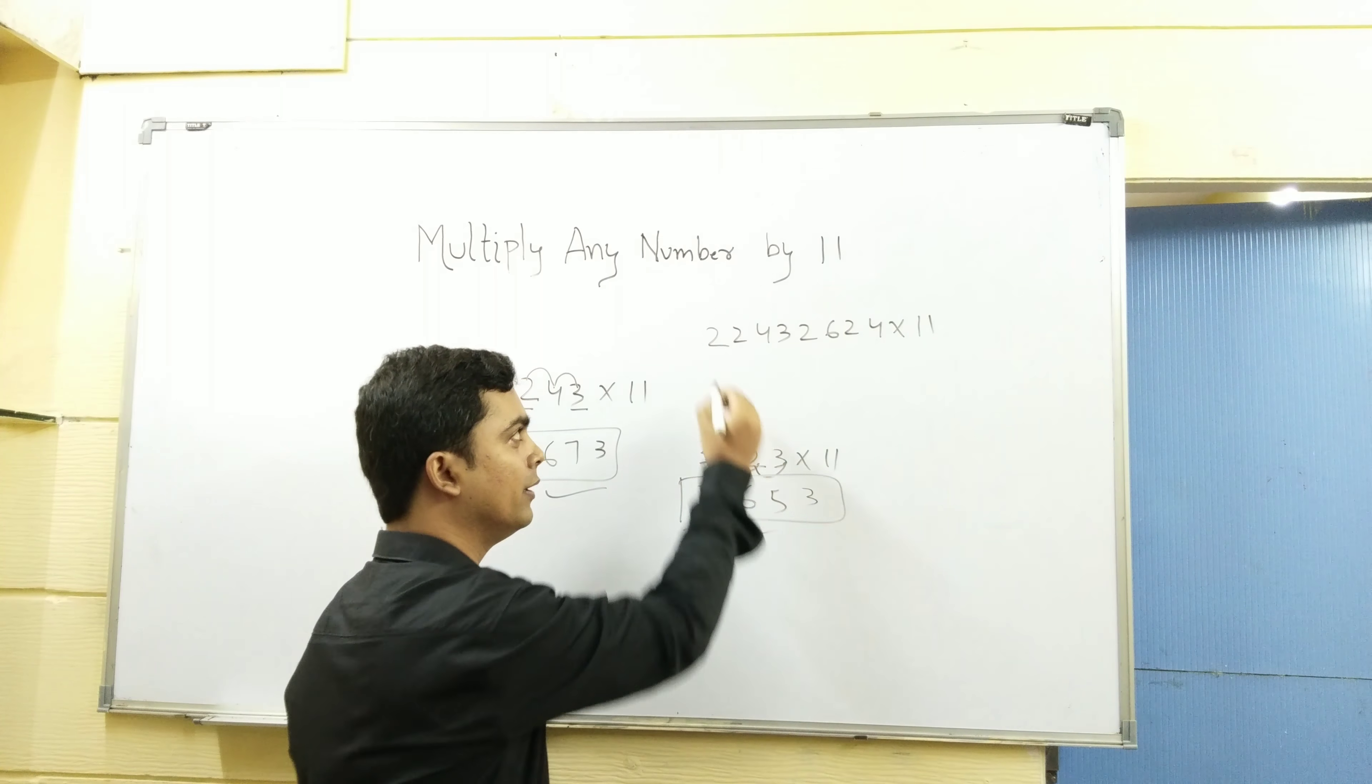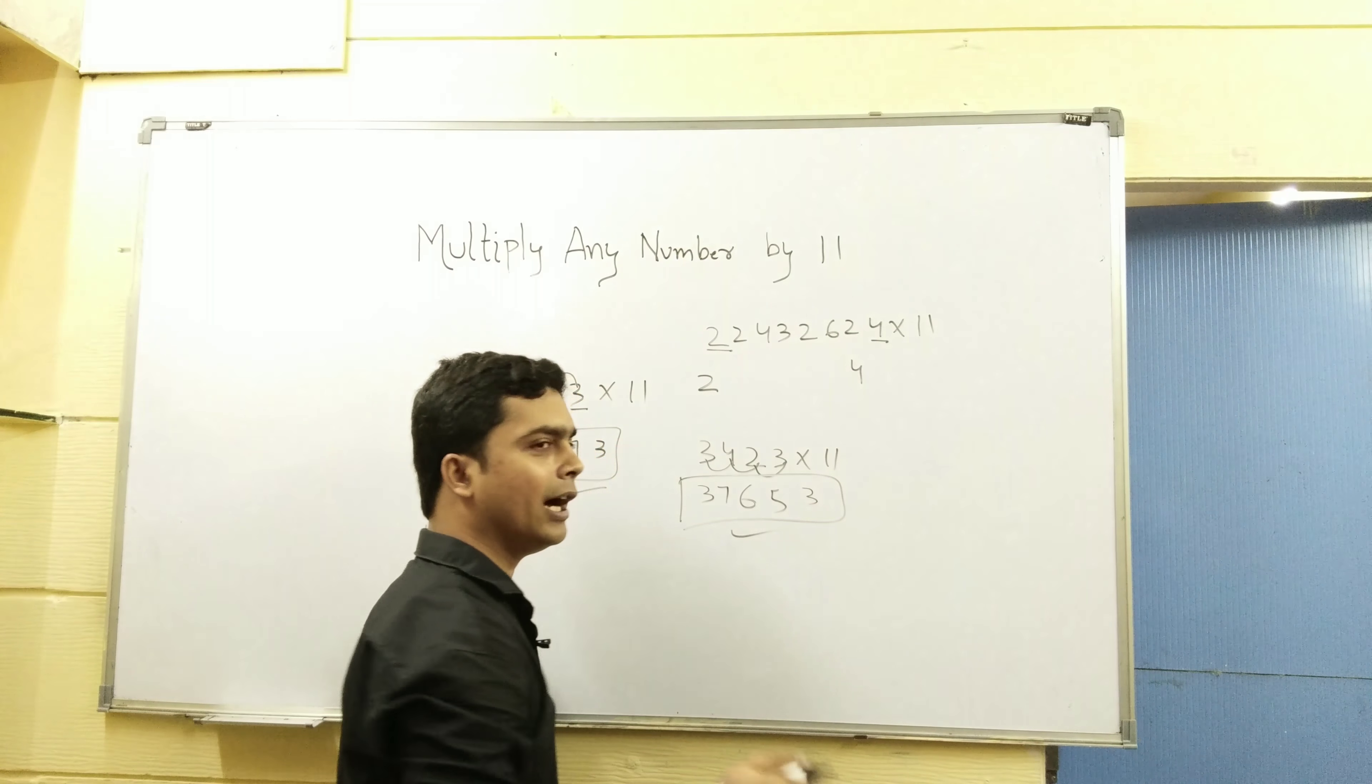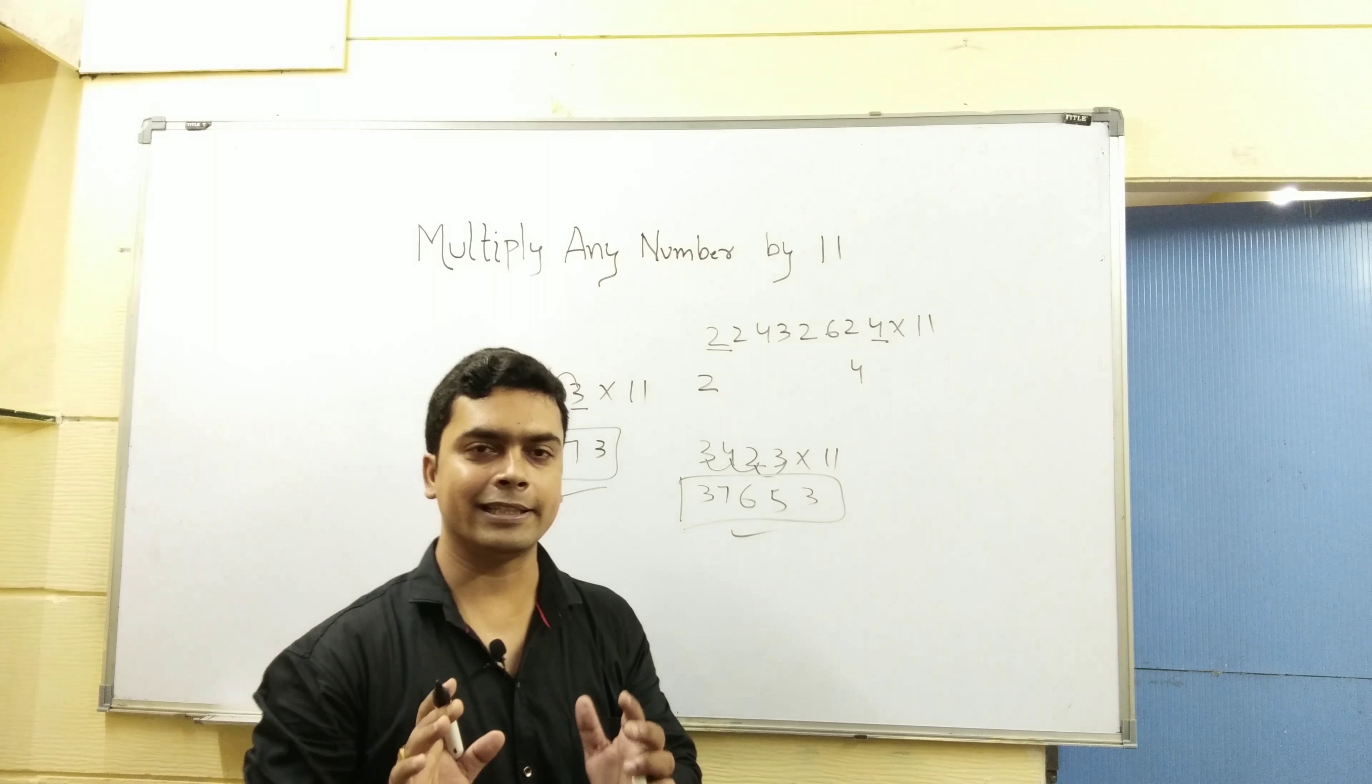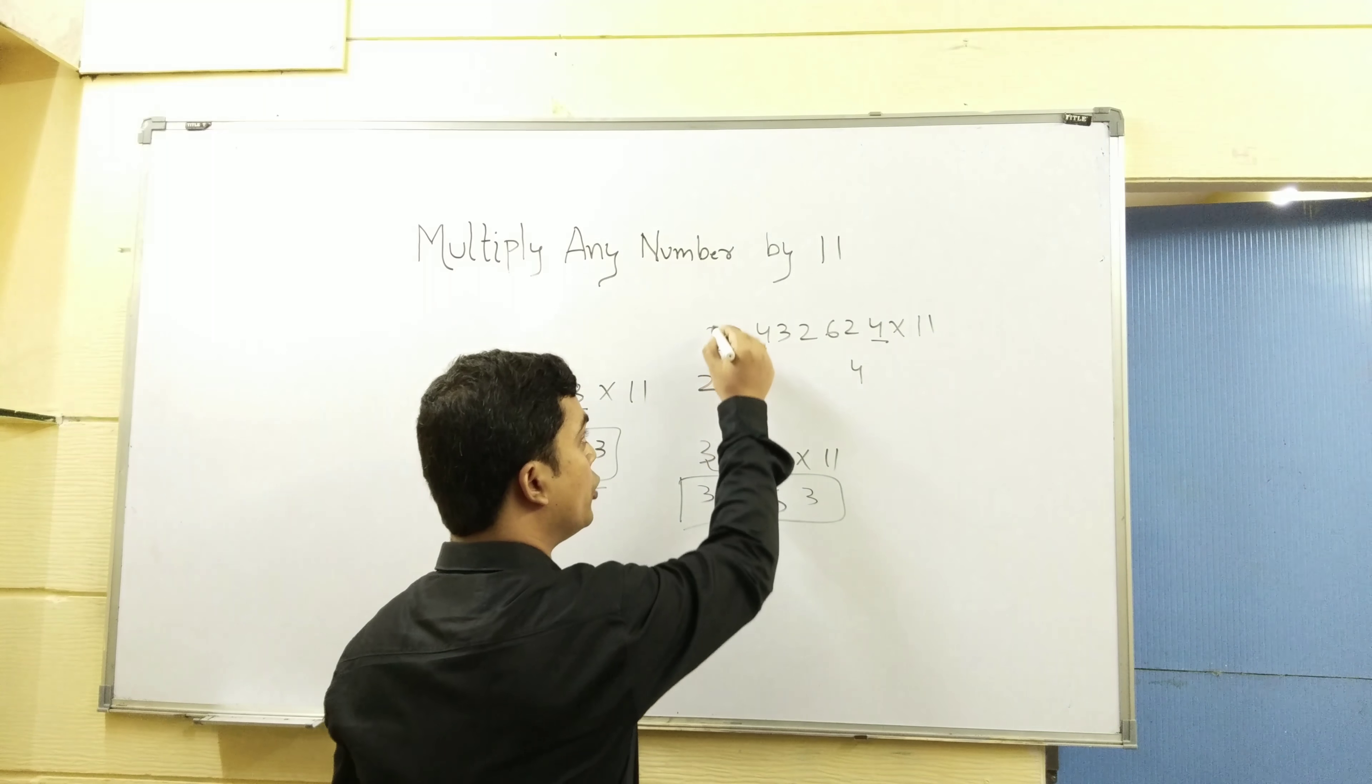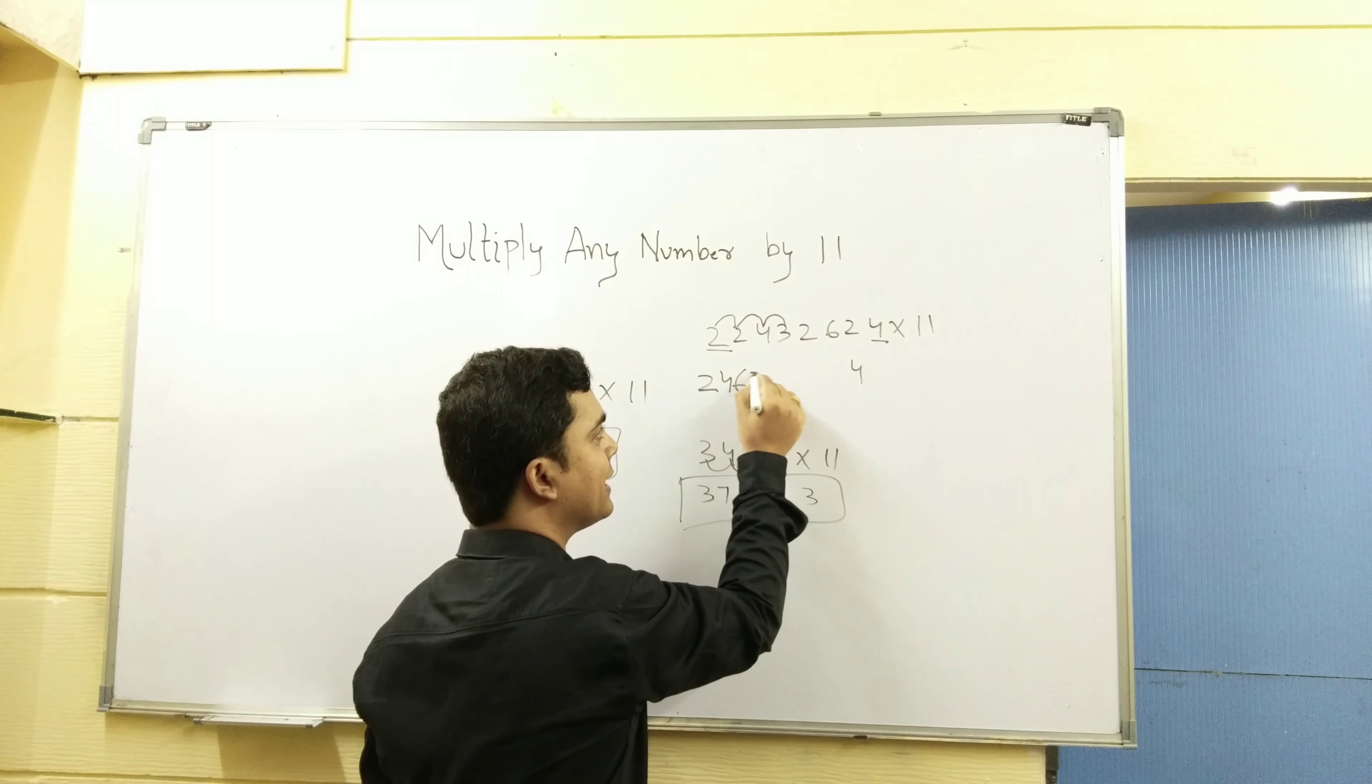First number and last number. First number 2, last number 4. 2 plus 4, 6. 4 plus 3, 7.